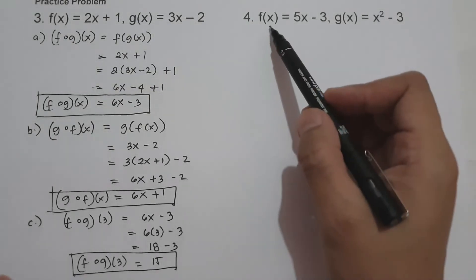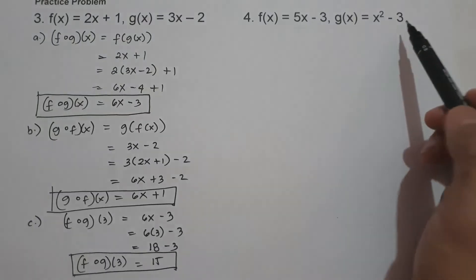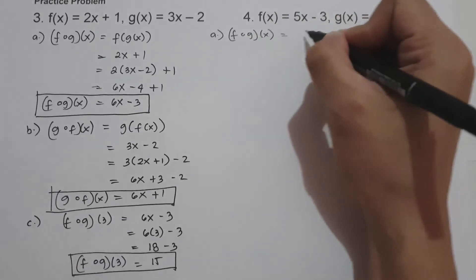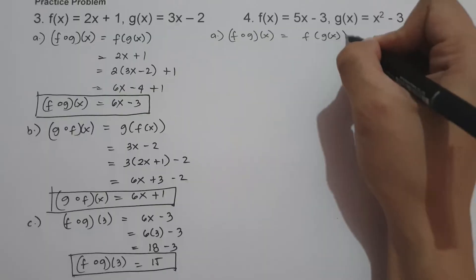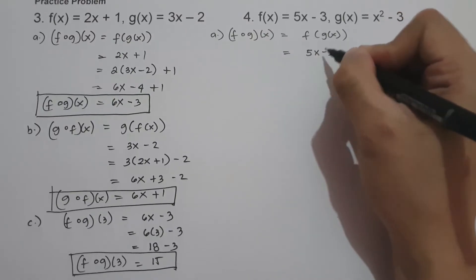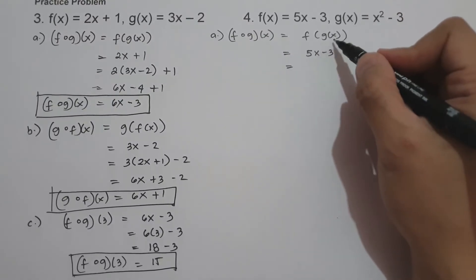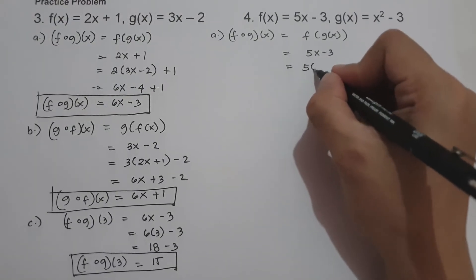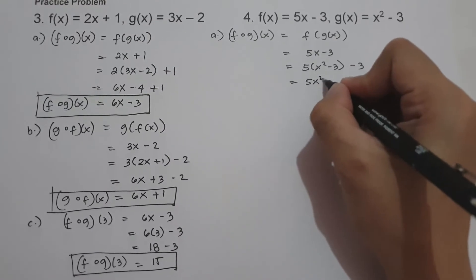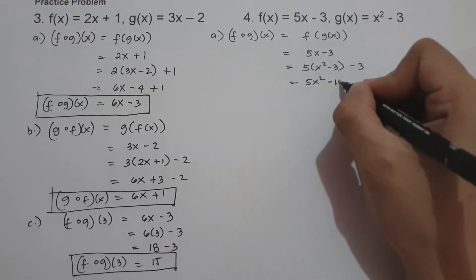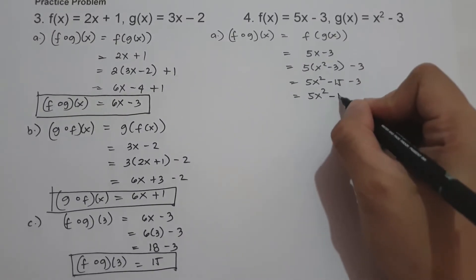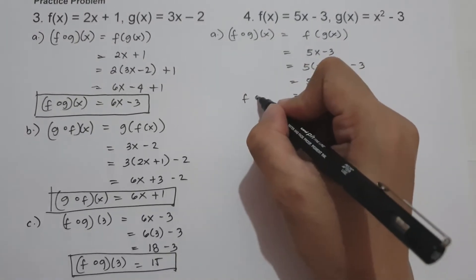On number 4, f of x equals 5x minus 3 and g of x equals x squared minus 3. So this will be f circle of g of x, and that is f of g of x. The value of f of x is 5x minus 3, and the value of x is g of x, which is x squared minus 3. So that is 5 times x squared minus 3 minus 3, giving us 5x squared minus 15 minus 3, which is 5x squared minus 18. And this is f circle of g of x.